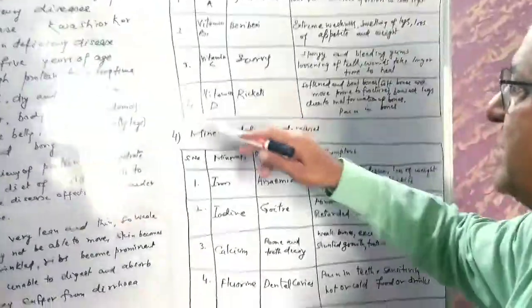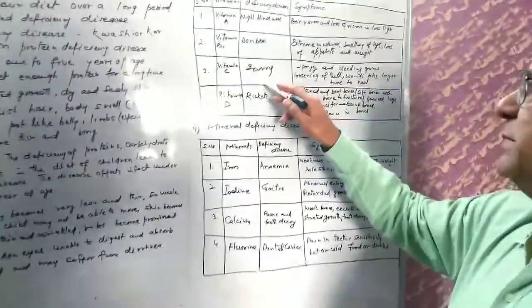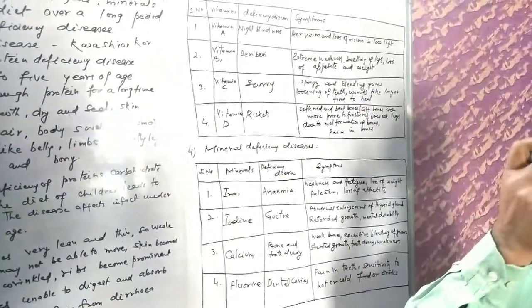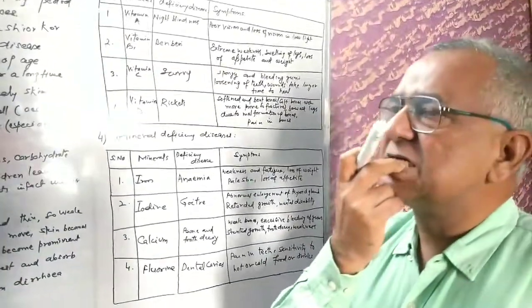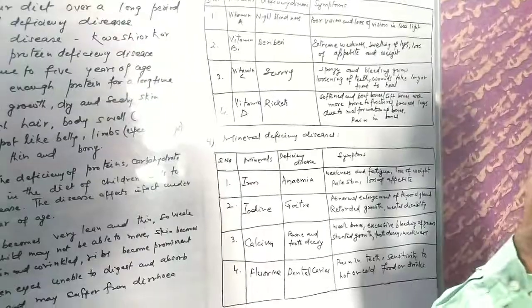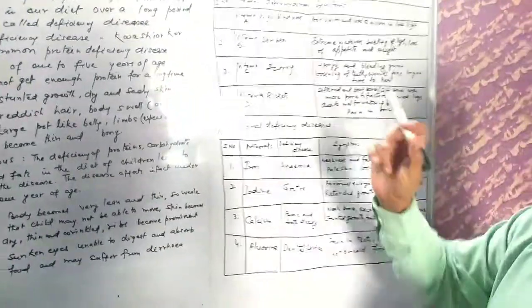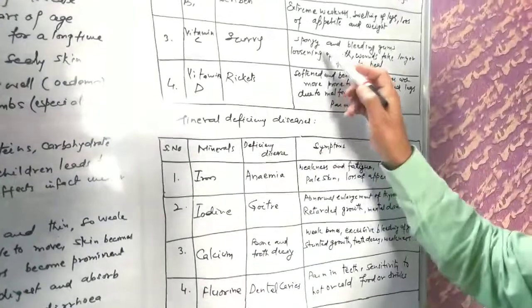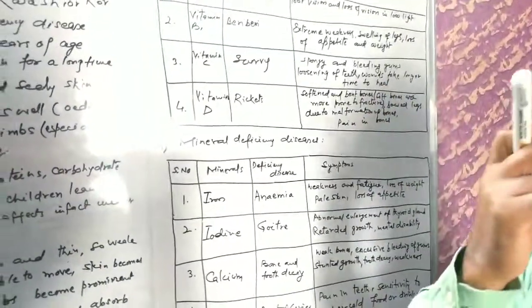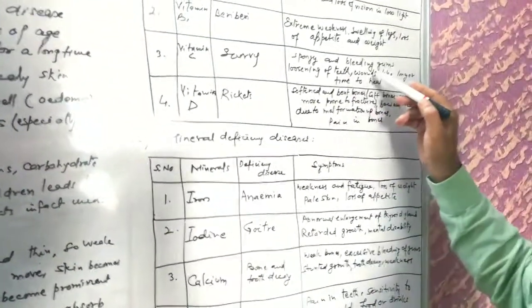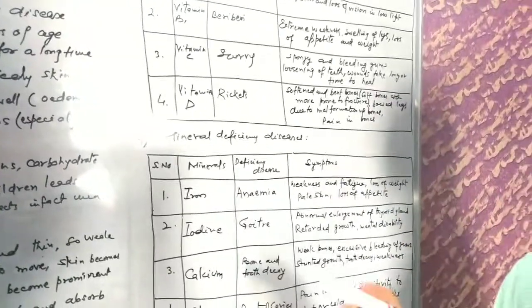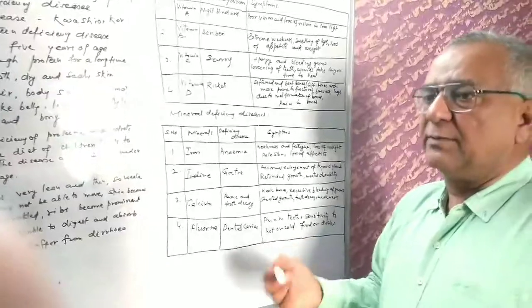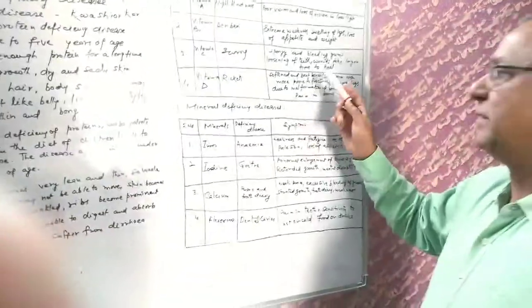Next category is Vitamin C. The deficiency leads to scurvy. What are the symptoms? Spongy and bleeding gums - your gums swell, become spongy and start bleeding. Wounds take longer time to heal instead of healing quickly.